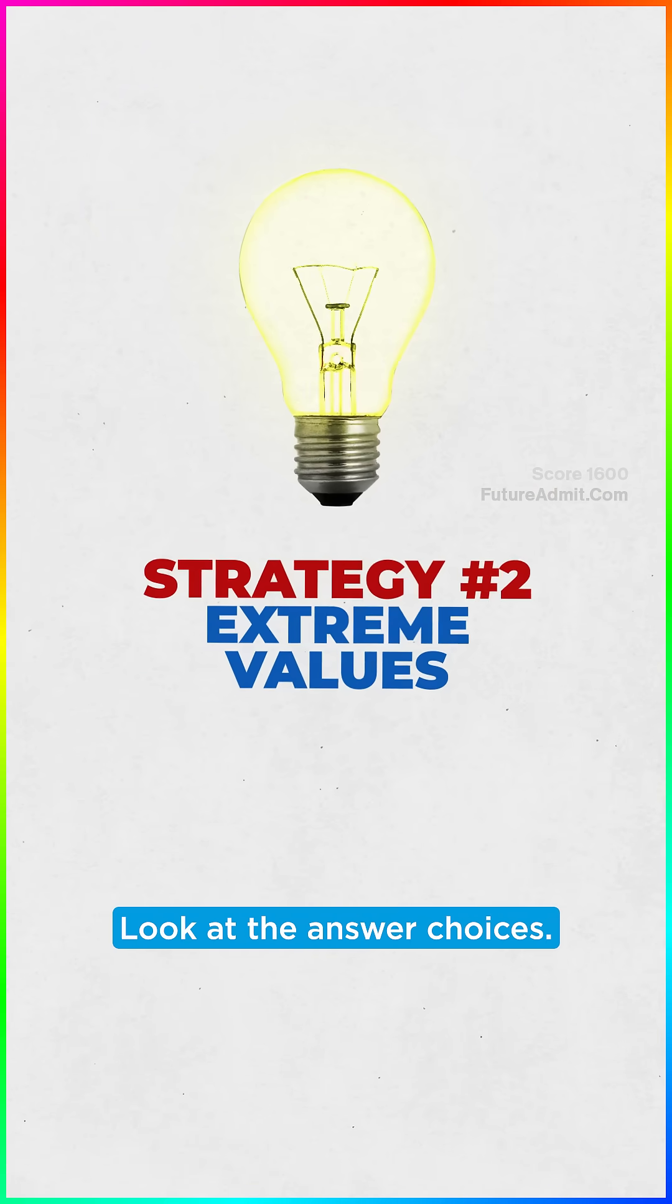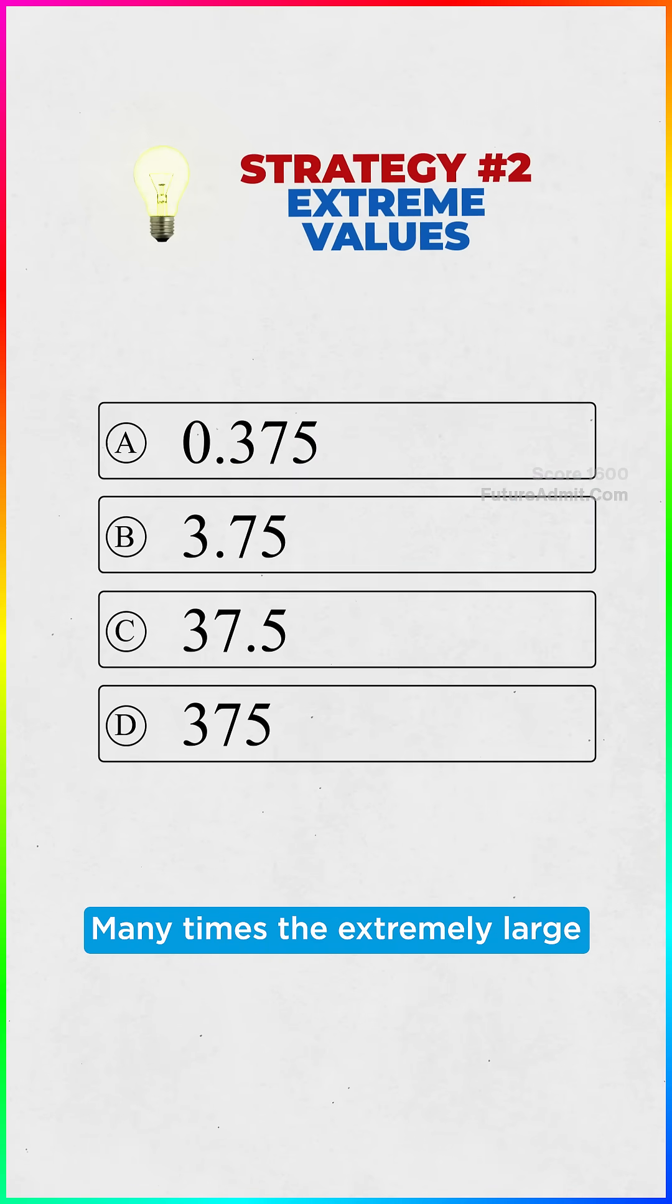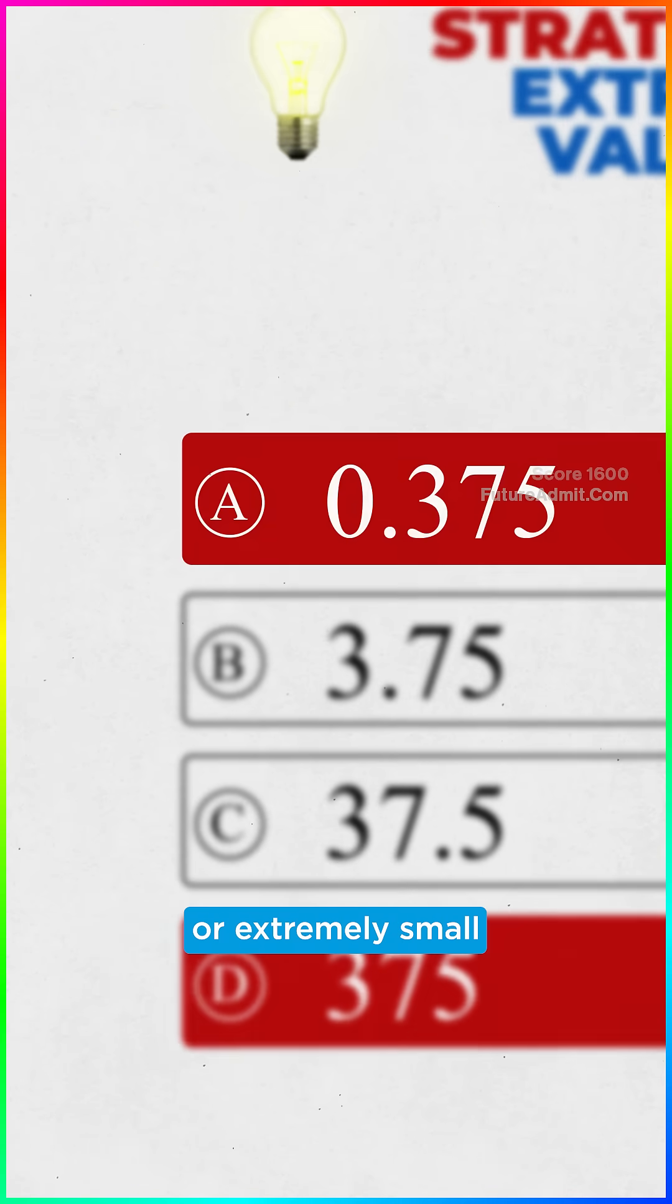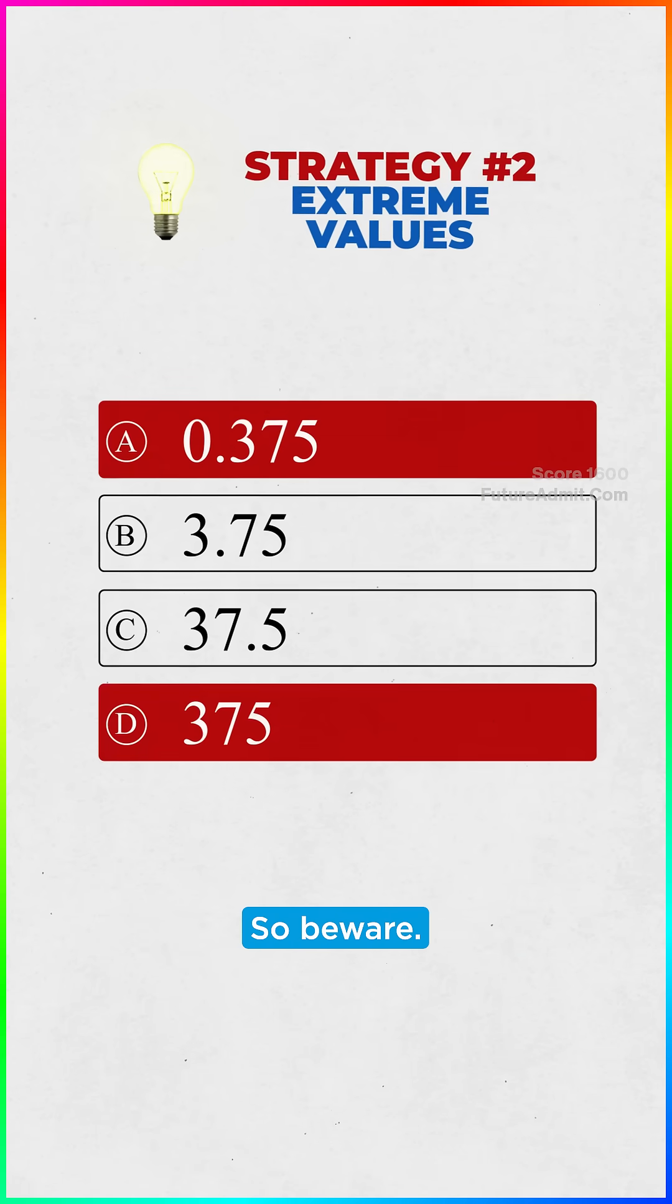Strategy 2: Avoid extreme values. Look at the answer choices. Many times, the extremely large or extremely small numbers are often wrong. Not always, but typically, so beware.